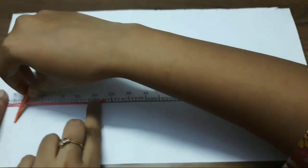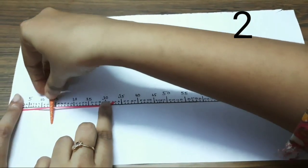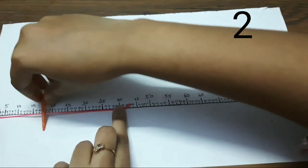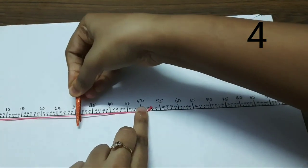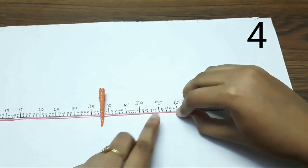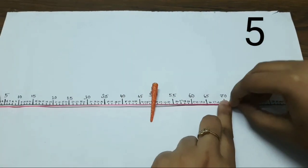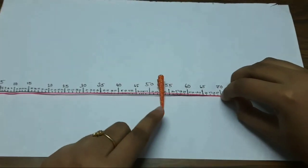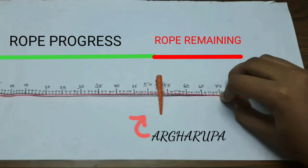After another second, the ant moves another 5 cm and we stretch the rope to 40 cm. She continues moving another 5 cm each second, and the rope grows to 70 cm. You can notice that despite stretching the rope much more than she covers each second, the ant is making progress towards her goal.